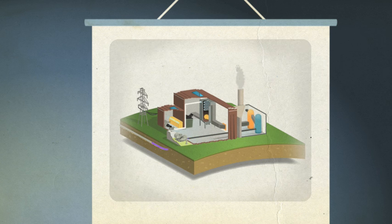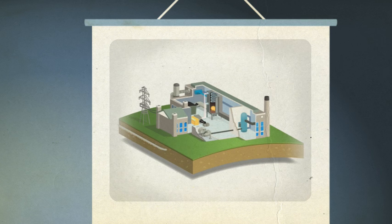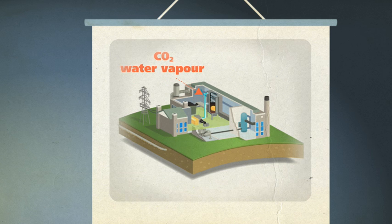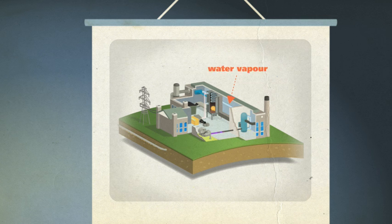The last of the key capture methods is the oxyfuel process. Before combustion, nitrogen is stripped from oxygen in an air separator. The leftover oxygen is then purer than the normal air we breathe. When combusted with a fossil fuel, it produces CO2 and water vapour. This combination is put through turbines to generate electricity. Afterwards, the water vapour is cooled, condensed and removed, and the remaining CO2 gas is safely captured.